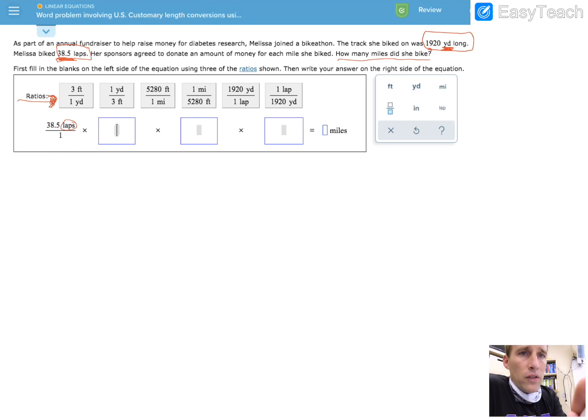So to change these laps into yards, I can use this one right here. Laps into yards. So I will have 38.5 over one laps times there's 1920 yards in each lap.